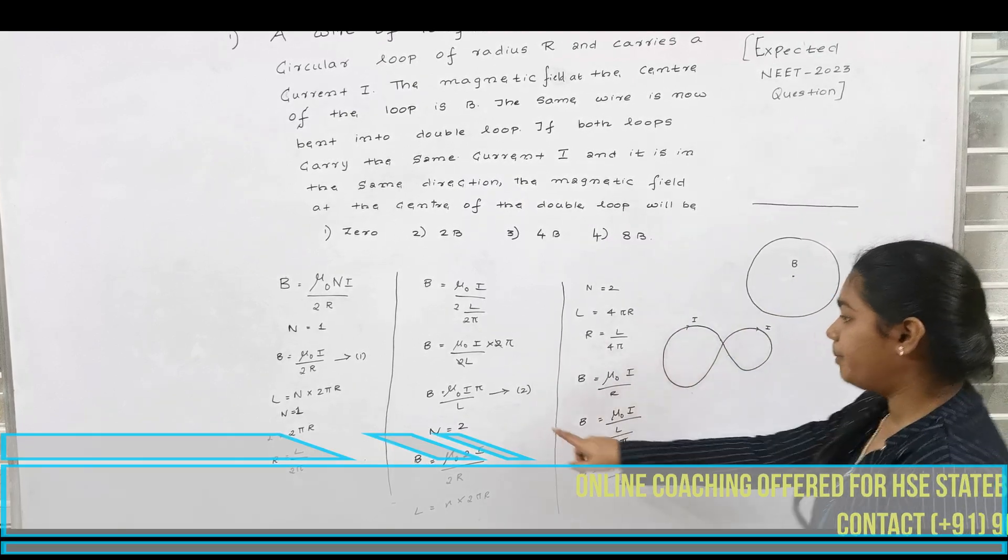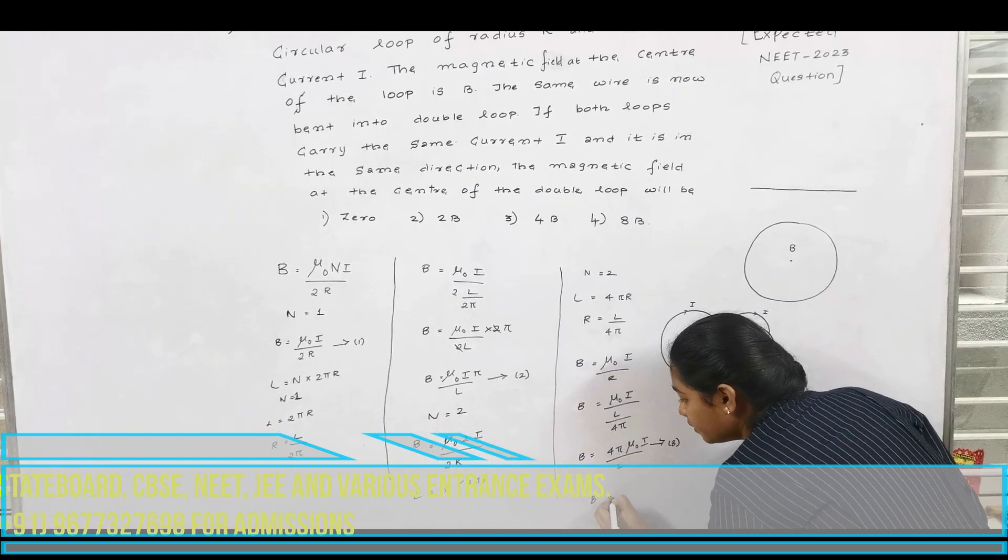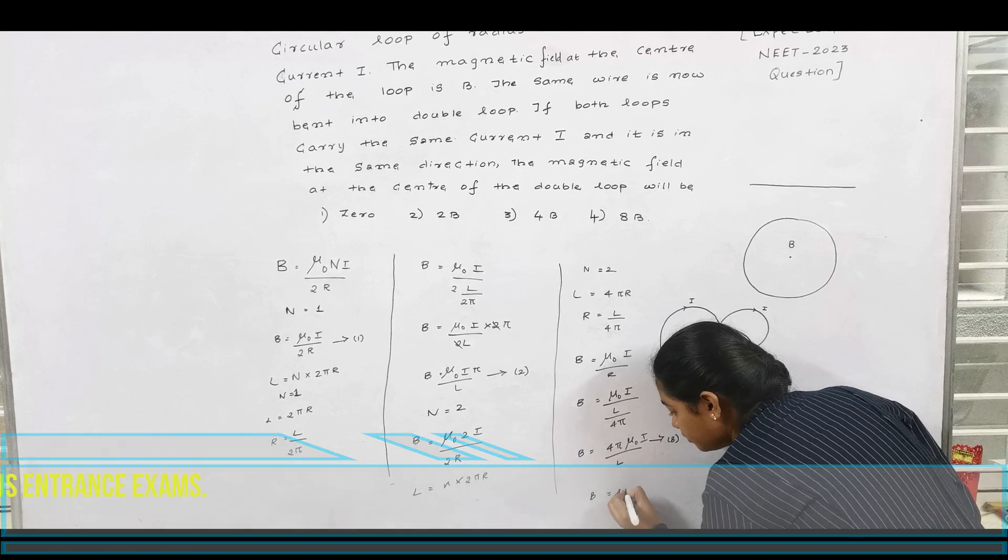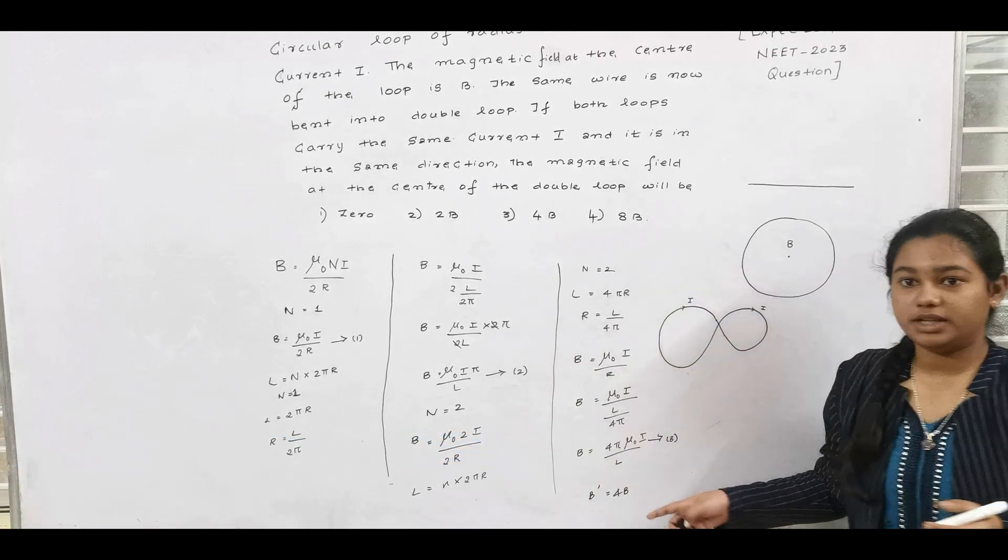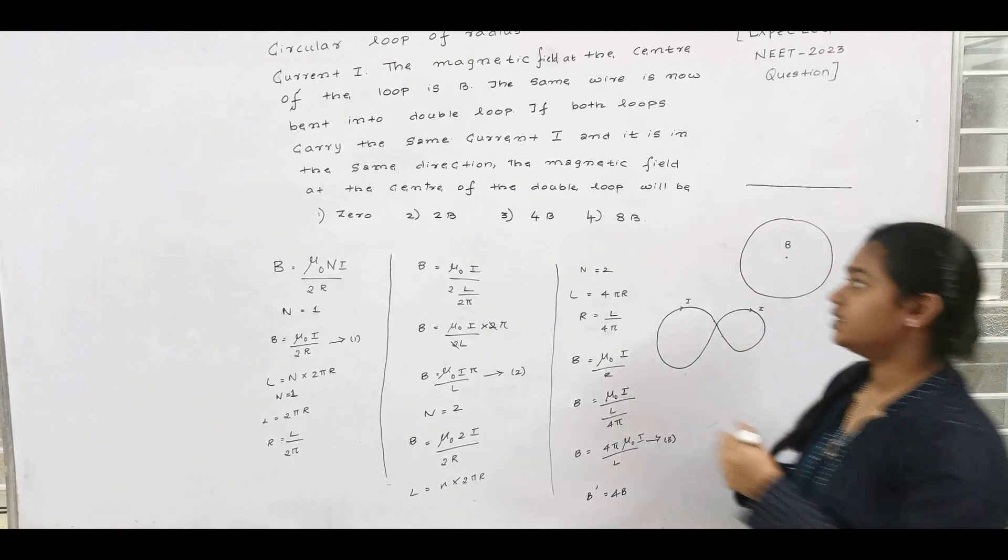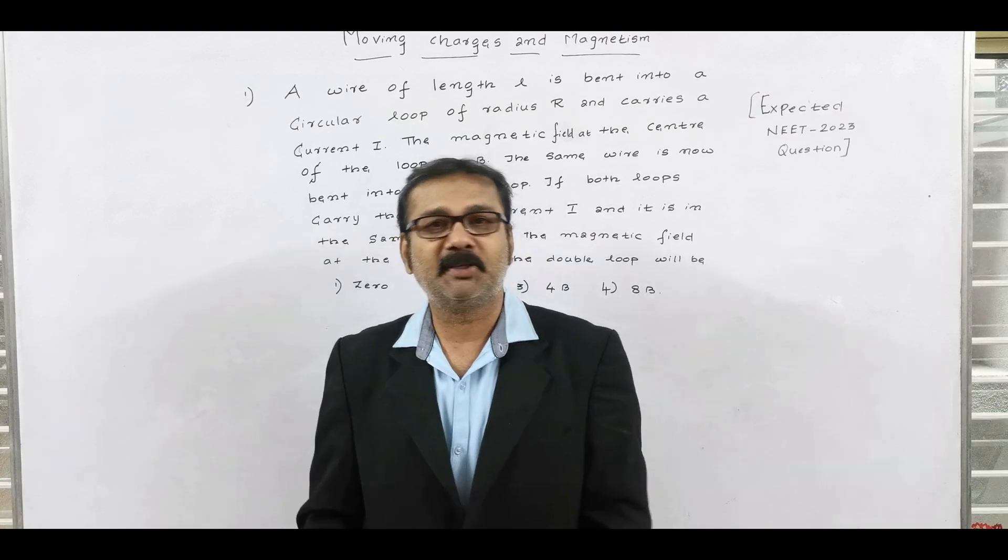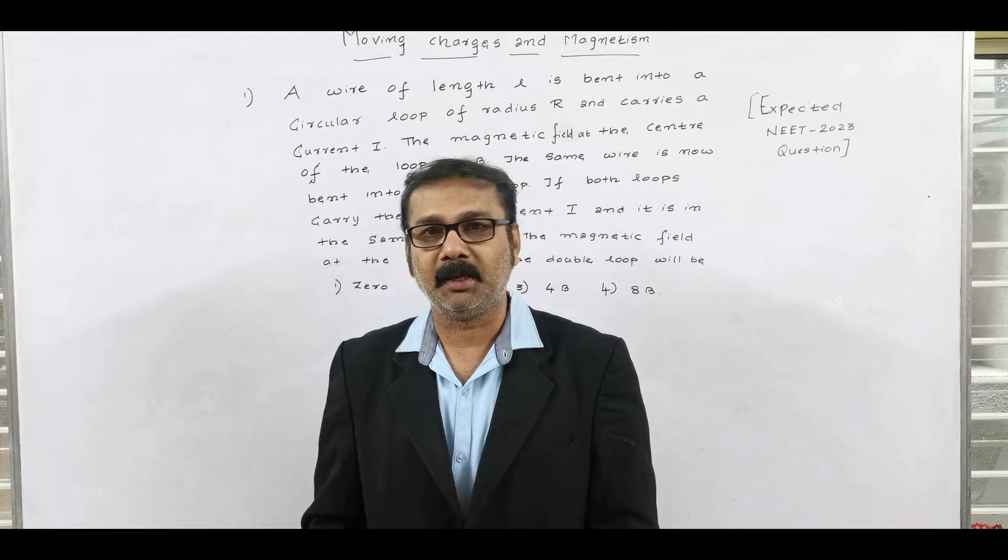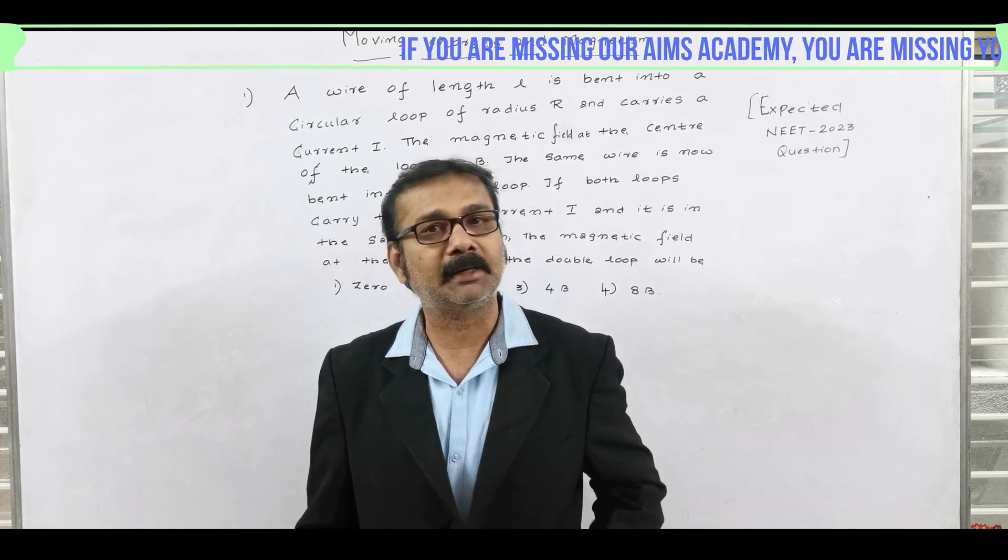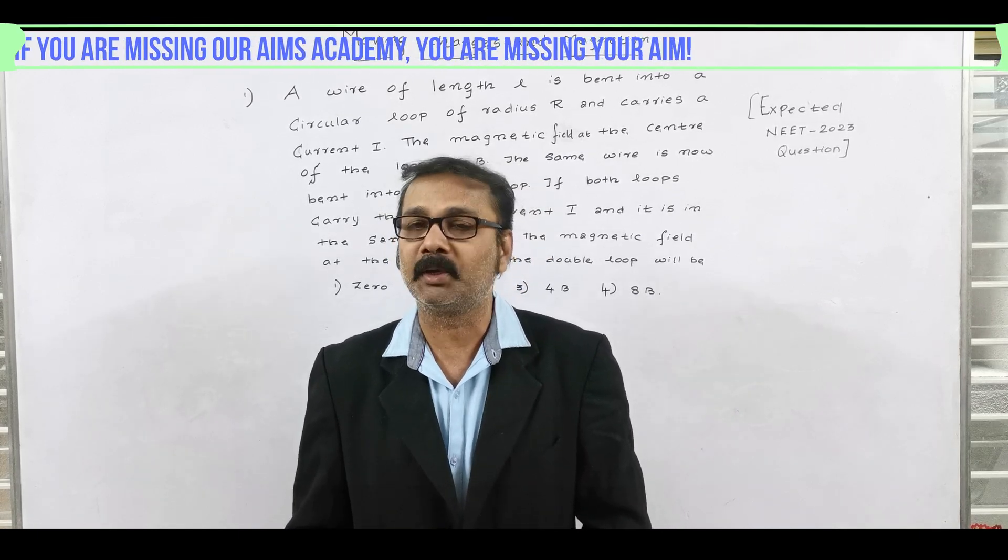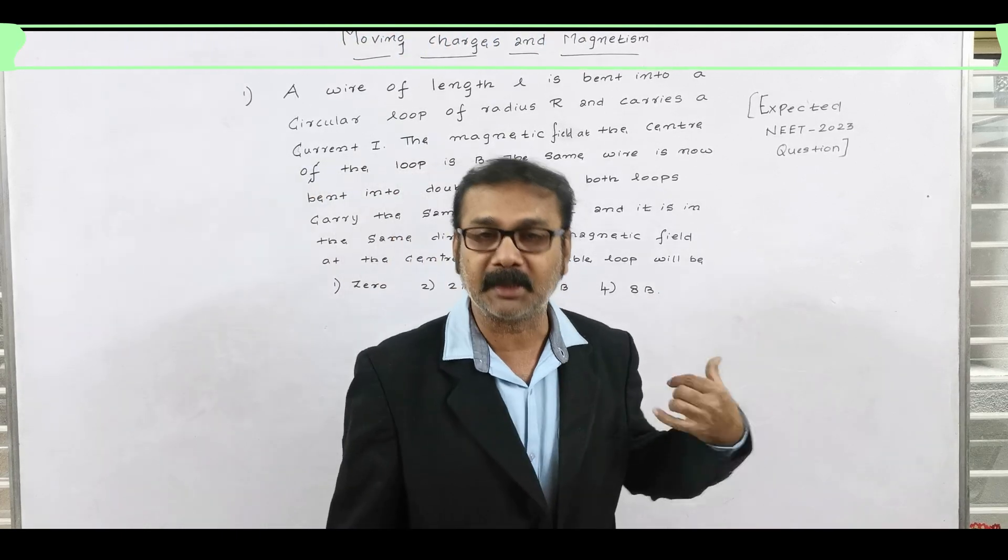Now if you compare equation 2 and 3 we get B dash is equal to 4B. So the option is 3. I hope you have enjoyed the long descriptive way for the same question which Rashmi has taken very clearly. So the answer as per our discussion is the option, the answer lies in option 3 that is 4B.